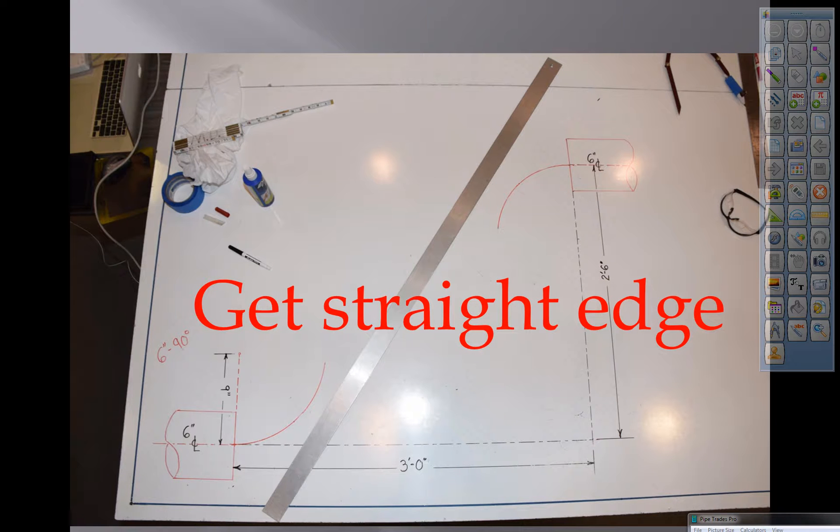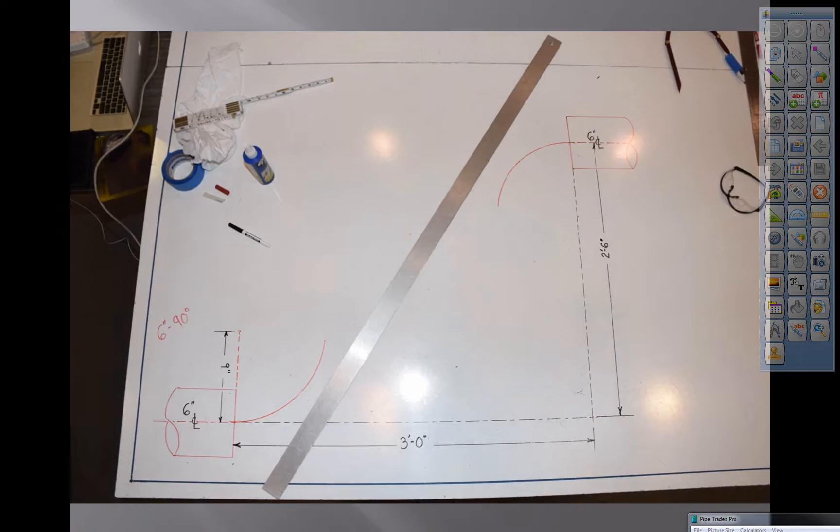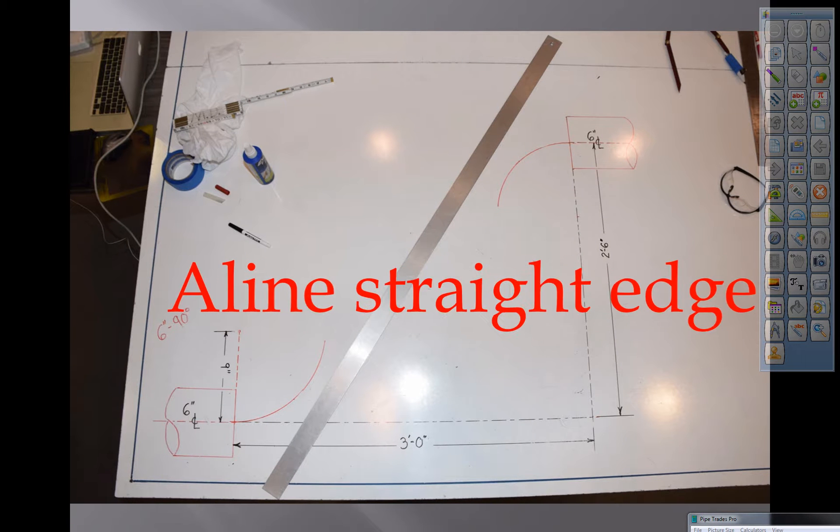Get a straight edge or a snap line. What we're going to do is we're going to connect these arcs. Now you want to align the straight edge over the arcs. Watch the arrows. We're going to get that straight edge over that arc. As such.